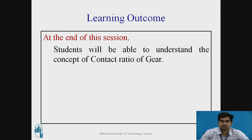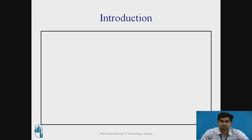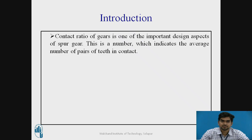The learning outcome of this session is that students will be able to understand the concept of contact ratio of gear. The contact ratio of gear is one of the important design aspects of spur gear — it is a number which indicates the average number of pairs of teeth in contact.